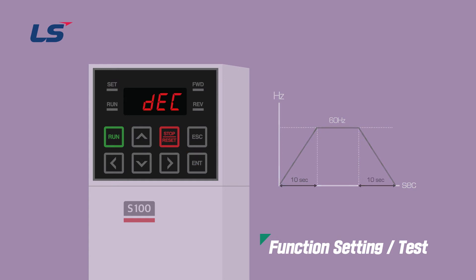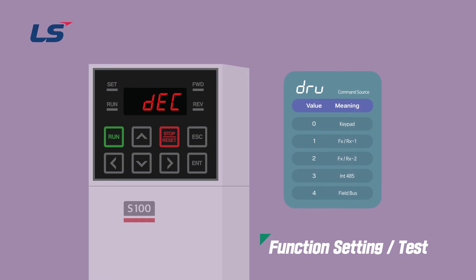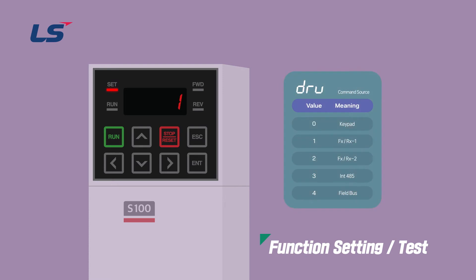Next, we will set up the operation command method to select the input device to be used for the operation command. The operation command method can be designated in operation group DRV. When shipped from the factory, the initial value of the operation command is the operation signal through the multi-function input terminal. In this example, we'll run a test that works with a switch.